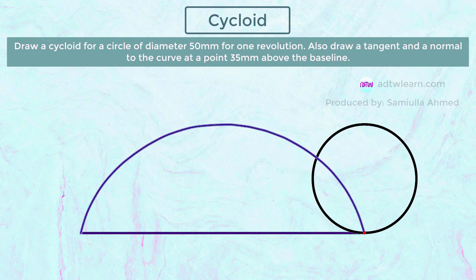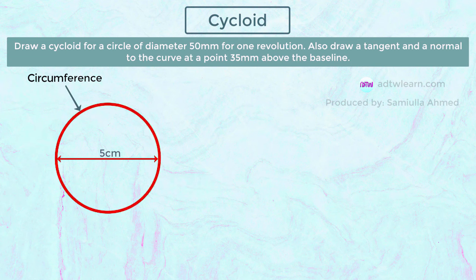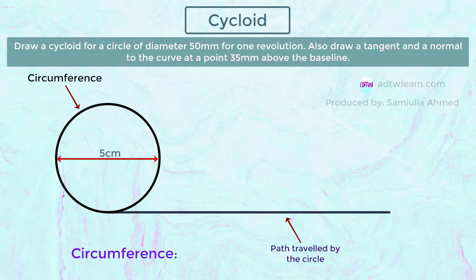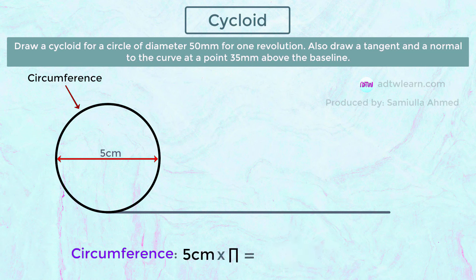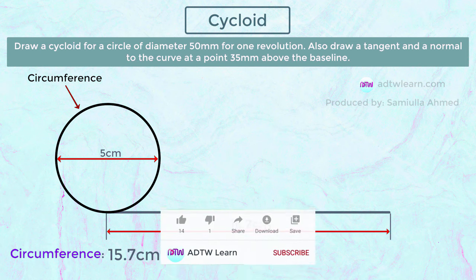Our goal is to understand how to draw this curve for one complete revolution. Consider this circle having a diameter of 50 millimeters. The path traveled by the circle will be equal to its circumference. The circumference is given by diameter times pi, which equals 157 millimeters or 15.7 centimeters. Therefore this baseline distance is 15.7 centimeters.